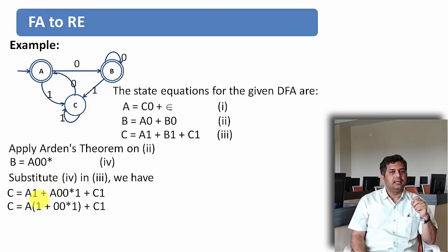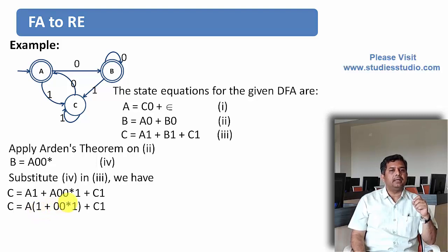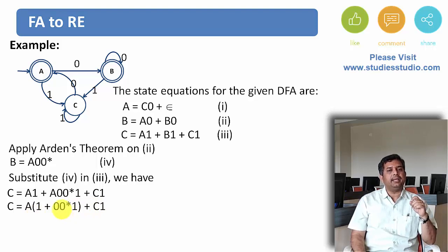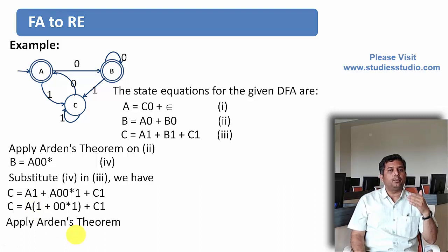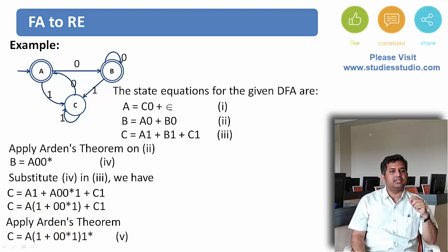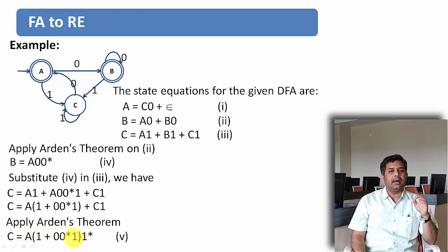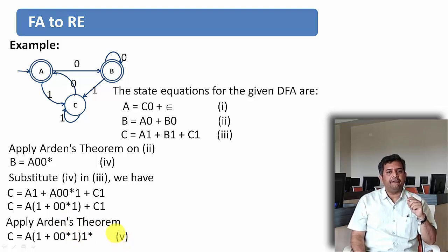Taking A common: C equal to A·(1 plus 0·0 star·1) plus C·1. Now we can apply Arden's theorem again. Here R is C, P is 1, and Q is A·(1 plus 0·0 star·1). Applying Q·P star gives: C equal to A·(1 plus 0·0 star·1)·1 star. Let this be equation 5.